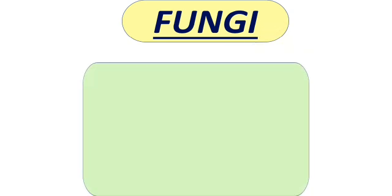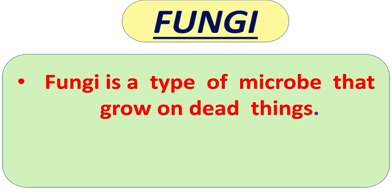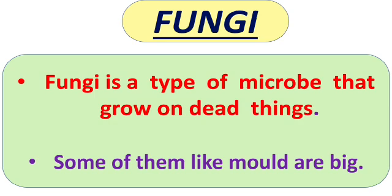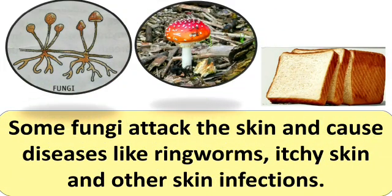Next is fungi — also called fungus. Fungi is a type of microbe that grows on dead and decaying plants and animals. Some examples are yeast, mushrooms, and mold. Mold grows on plants, wood, fabric, and also on food like a slice of bread. Some fungi attack the skin and cause diseases like ringworms and other skin infections.